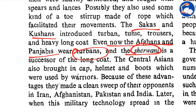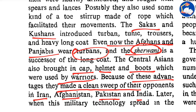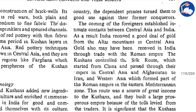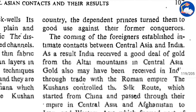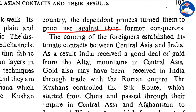The Central Asians also brought in the cap, helmet and boots which were used by warriors. Because of these advantages they made a clean sweep of their opponents in Iran, Afghanistan, Pakistan and India. Later, when this military technology spread in the country, the dependent princes turned it to good use against their former conquerors — once the technology spread to other kingdoms in India, they took advantage of it.